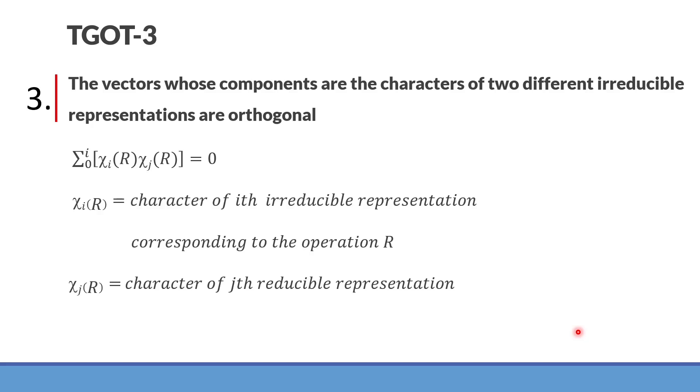Chi G R is a character of the jth reducible representation corresponding to the same operation R. This is the most important guideline for the great orthogonality theorem rule number three.